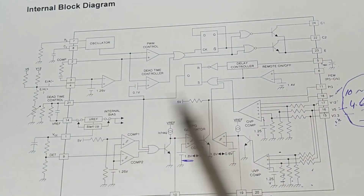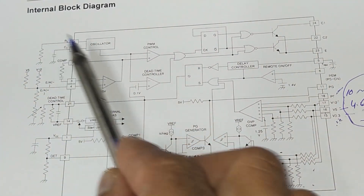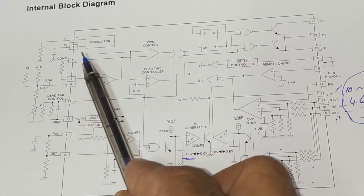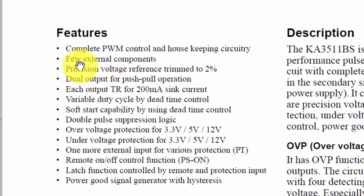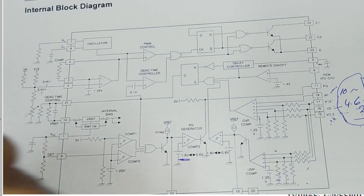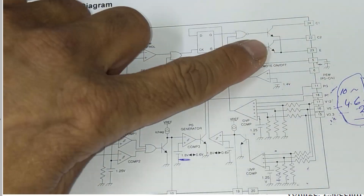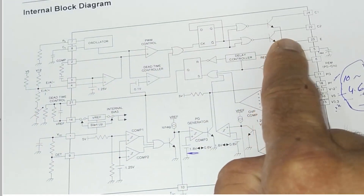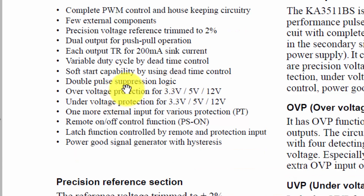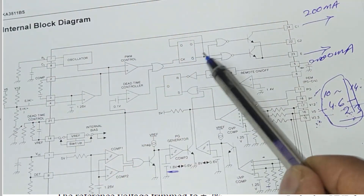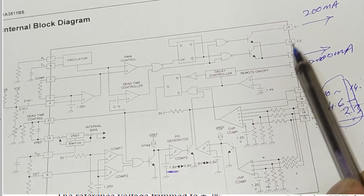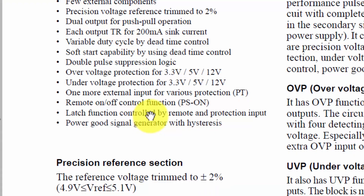We can adjust the oscillator frequency as needed using the RT-CT components - it can be programmed up to 400 kHz. The datasheet describes PWM controller and housekeeping circuitry with very few external components: just some capacitors and resistors. It has dual output for push-pull operation, output transistors rated for 200 mA sink current, a soft start circuit, dead time control, and double pulse suppression logic. This logic prevents both transistors from switching simultaneously - when one is on, the other is off.